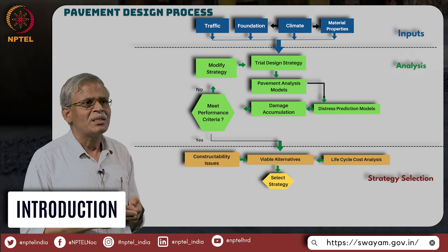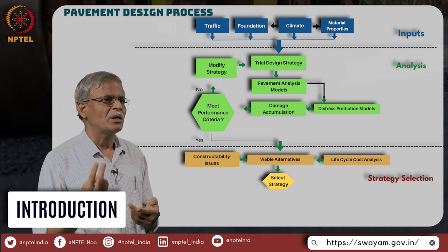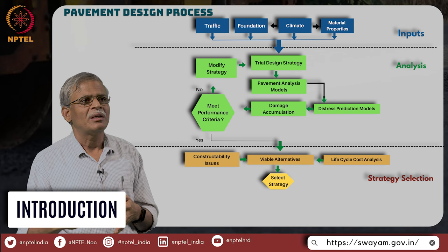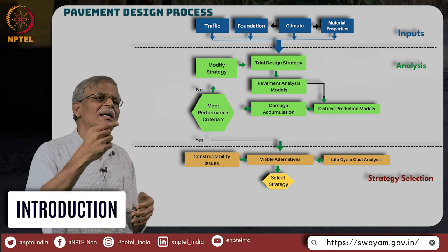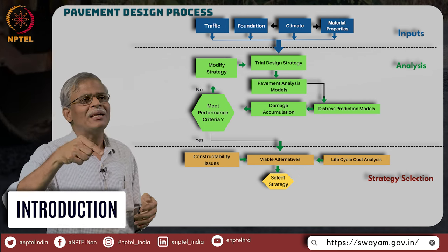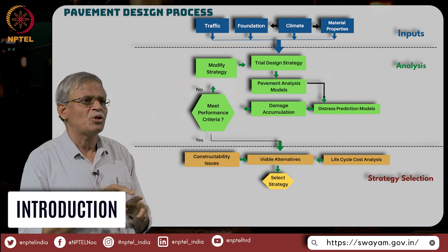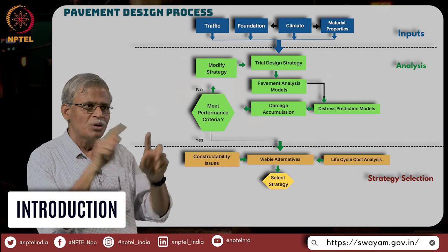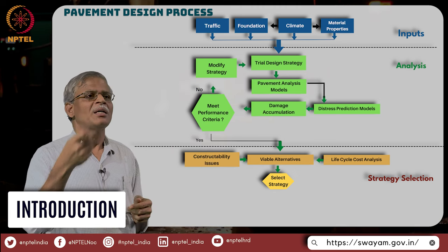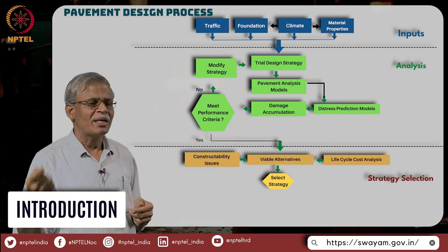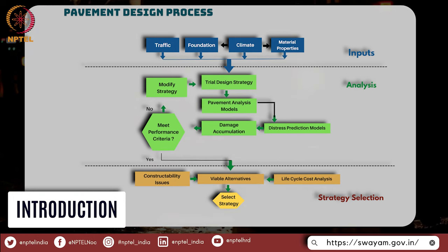In the next step in the design, we need to understand two important things: how do the pavements fail? The pavements fail due to rutting and fatigue predominantly, and these things are intricately related to the analysis procedure that you use. What we do is use layered linear elastic theories, compute the critical stresses and strains, and then try to find out whether this designed cross section can actually withstand the traffic that we have estimated.